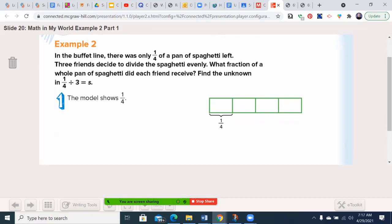Example two. In the buffet line, one of my favorite places, there's only 1/4 of a pan of spaghetti left. Three friends decide to divide the spaghetti evenly. What fraction of a whole pan of spaghetti did each friend receive?